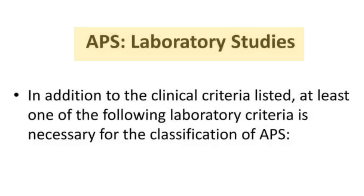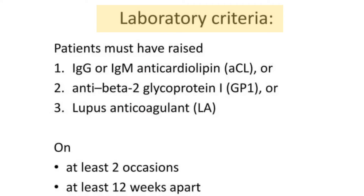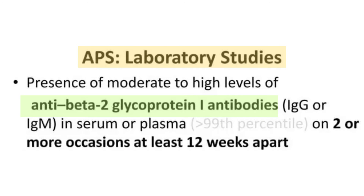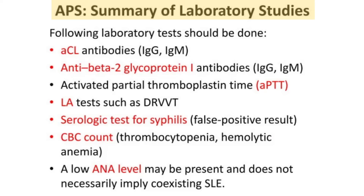In addition to clinical criteria, at least one of the following laboratory criteria is necessary for classification. These include: anti-cardiolipin antibody IgG or IgM, anti-beta-2 glycoprotein 1 antibody, or lupus anticoagulant — each on at least two occasions and at least 12 weeks apart. At least one must be present; all three may also be positive simultaneously.